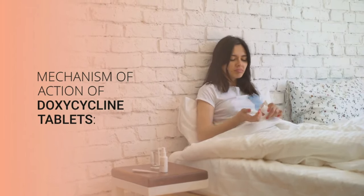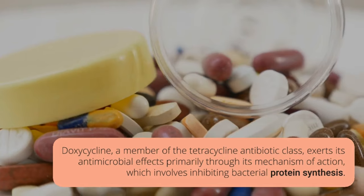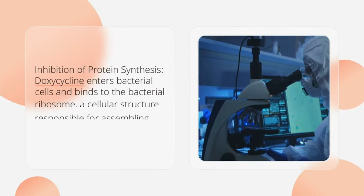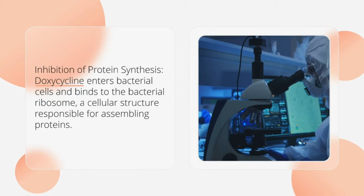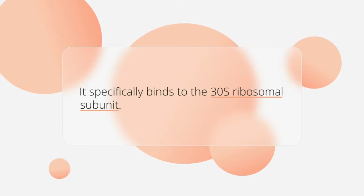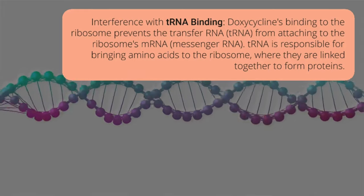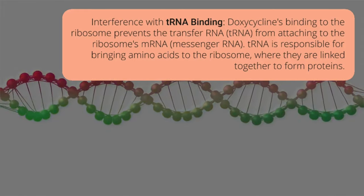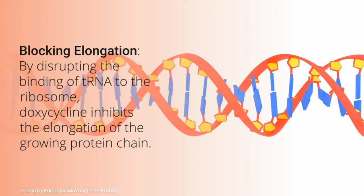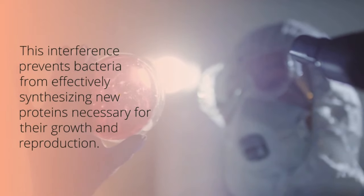Mechanism of Action of Doxycycline Tablets. Doxycycline, a member of the tetracycline antibiotic class, exerts its antimicrobial effects primarily by inhibiting bacterial protein synthesis. Doxycycline enters bacterial cells and binds to the bacterial ribosome, specifically to the 30S ribosomal subunit. This binding prevents transfer RNA (tRNA) from attaching to the ribosome's mRNA. Since tRNA is responsible for bringing amino acids to the ribosome where they are linked together to form proteins, doxycycline inhibits the elongation of the growing protein chain, preventing bacteria from effectively synthesizing new proteins necessary for their growth and reproduction.